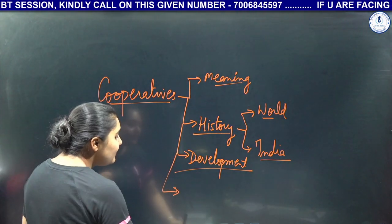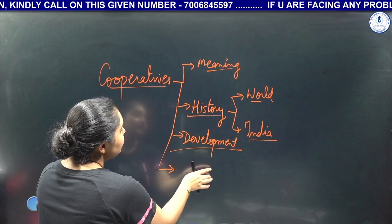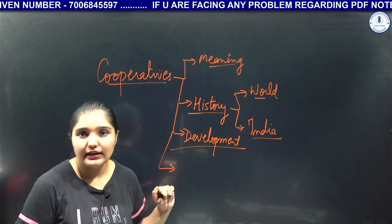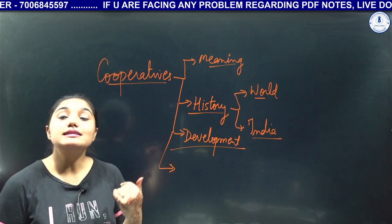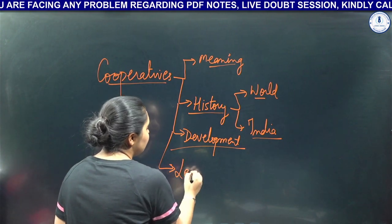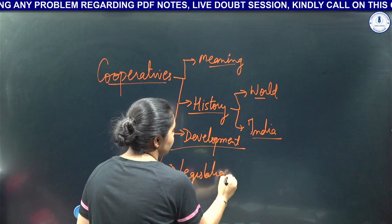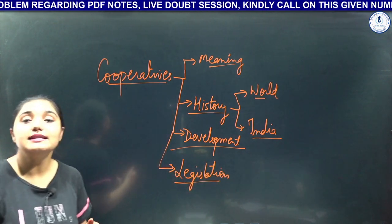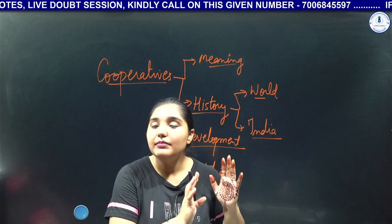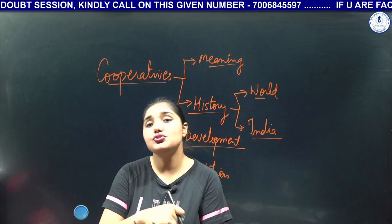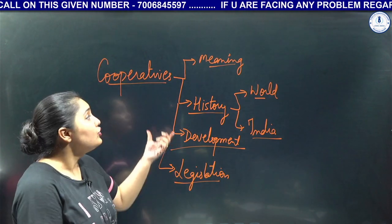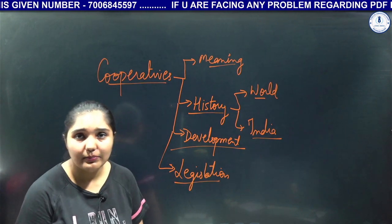After development, we need to look at legislation. When cooperatives came to India, what acts were passed, what regulations came, what happened? We need to see all the legislation — which acts came, what rules the government made, what was done legislatively. We also need to see when cooperatives entered the Constitution, whether it is a state subject or a central subject. All of this we need to examine under legislation.